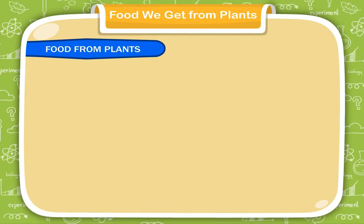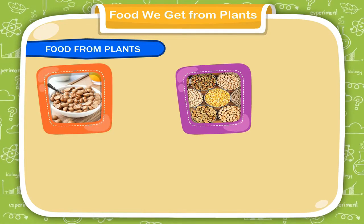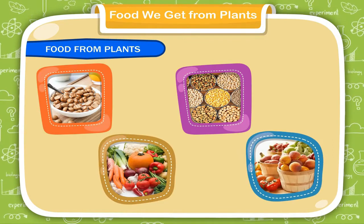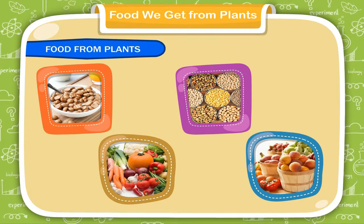Food from plants: Plants give us cereals, pulses, vegetables and fruits to eat. We also eat different parts of plants.